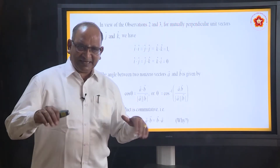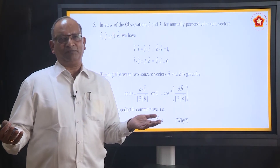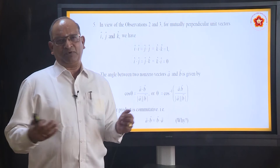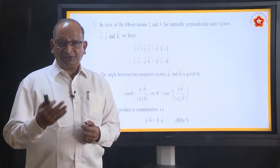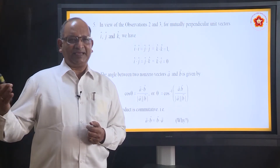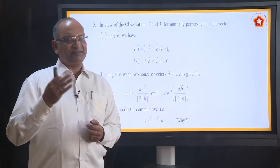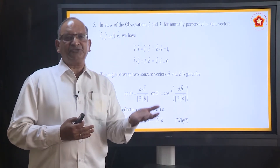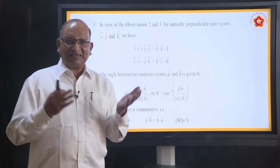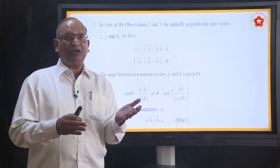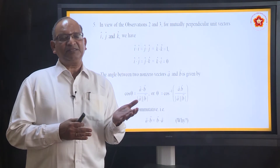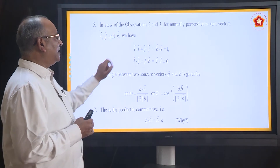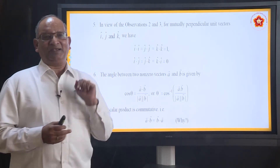In the previous class, we have seen how to express a vector in component form. We have three unit vectors I, J, K along the X, Y, and Z axis. Why are they called unit vectors? Because their magnitude is 1. And these vectors I, J, K are perpendicular to each other. Perpendicular to each other means the angle between them is 90 degrees. So in that case, I dot I is 1.